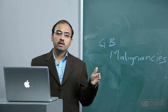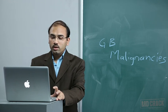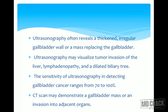Cancers invading but not growing through the muscular layer have minimal risk of nodal disease. Clinical manifestations are generally indistinguishable from cholecystitis and cholelithiasis: abdominal discomfort, right upper quadrant pain, nausea, and vomiting are most common. Jaundice, weight loss, and anorexia appear in later stages; ascites and abdominal mass are less common.